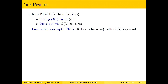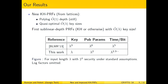In this talk we answer this question positively. We achieve a construction of new key homomorphic pseudorandom functions from lattices which still have polylogarithmic depth and also have roughly quasi-linear key sizes, where lambda is the length of the input. This is essentially quasi-optimal if you ignore log factors, because to achieve 2^lambda security you would need lambda bits of randomness as your seed. In particular, these are the first sublinear-depth PRFs — whether key homomorphic or otherwise — to achieve quasi-optimal key sizes. Taking ring analogues gives even better parameters.